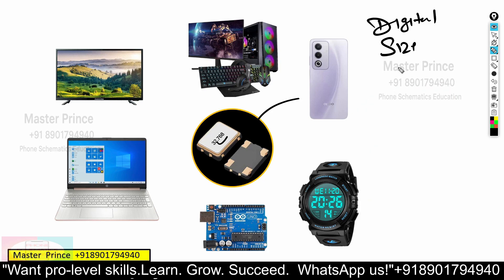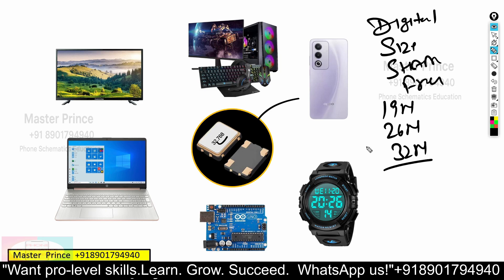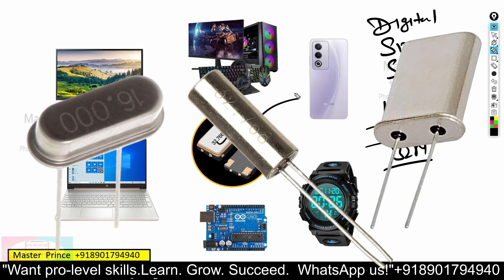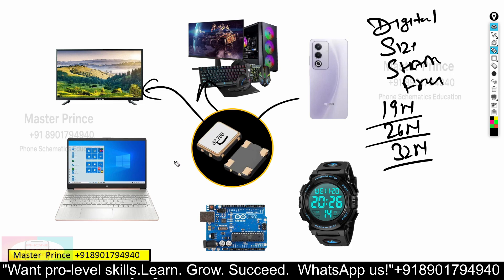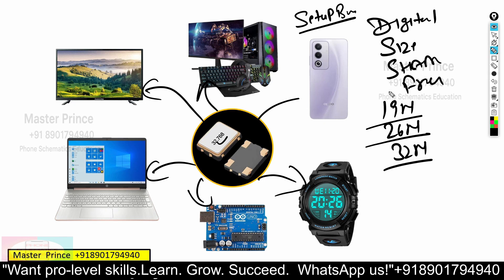The frequency also differs by device. In mobile phones you see 19 MHz, 26 MHz, or 32 MHz crystals. Other devices use different frequencies, shapes, and sizes. The XO is used in PCs, TVs, motherboards, laptops, Arduino boards, digital watches, set-top boxes, routers, and many more devices. That is why we call it the heartbeat of digital devices.